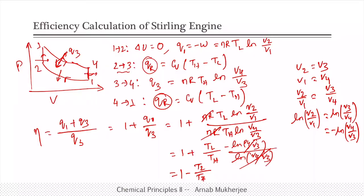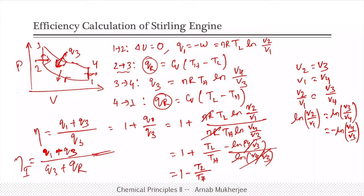If this regenerator were not there, the efficiency would be (Q₁ + Q₃) divided by the heat input Q₃ + Q_R, because heat would also need to be taken in during the isochoric steps. Q₁ and −Q_R cancel in the numerator, so the result would have lesser efficiency — we can call it the efficiency of an irreversible Stirling engine, which is less than the reversible one.